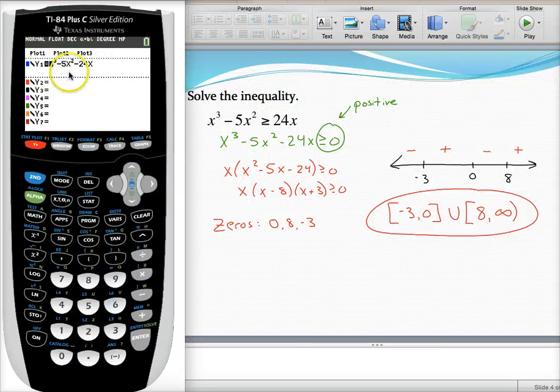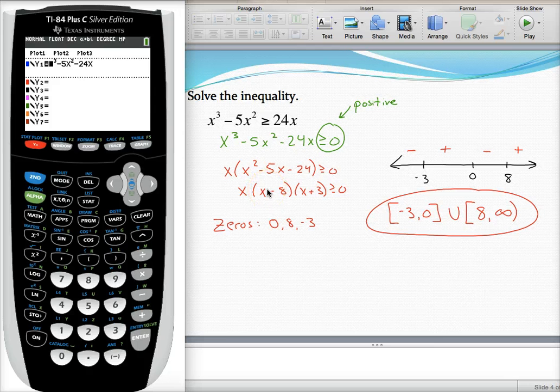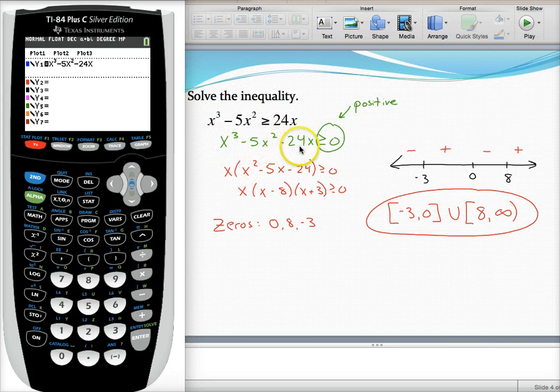All right, so you'll notice the polynomial I typed in my calculator was the unfactored polynomial. I just want to show you how if we didn't want to rely on factoring or if we couldn't, how we could still find those zeros using our table. You could type this in, you could type the original in, it doesn't matter.